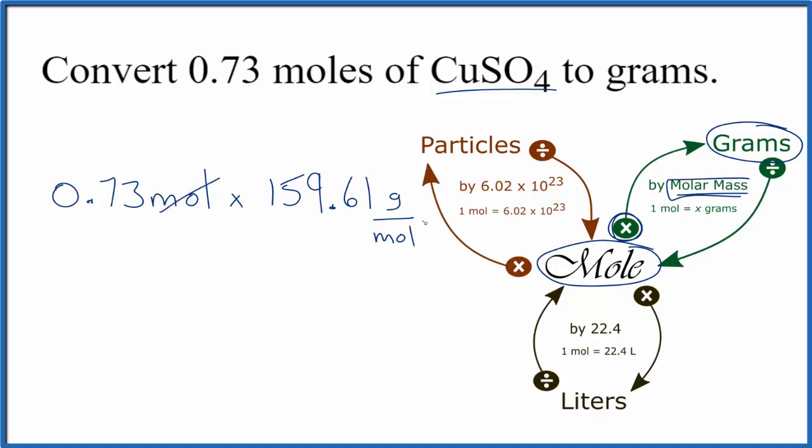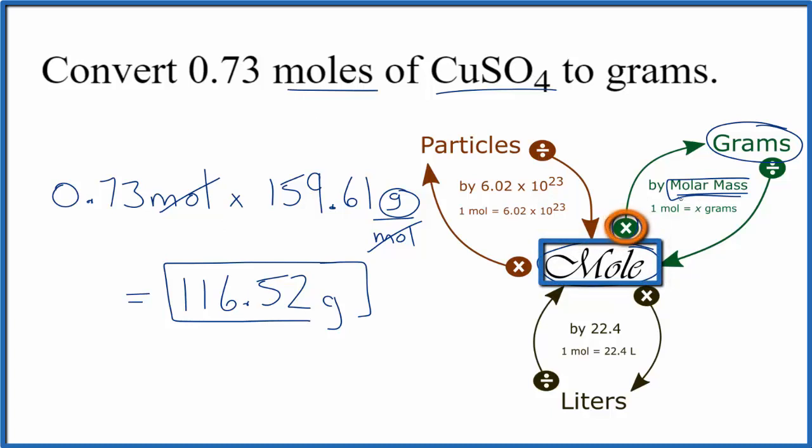We have moles on top and on bottom; they cancel out, which gives us grams. So we end up with 116.52 grams of CuSO4. To recap: we had our moles, we multiplied by the GFM (gram formula mass), and that gave us grams.